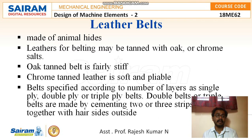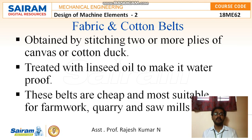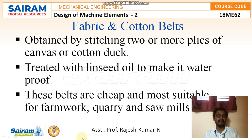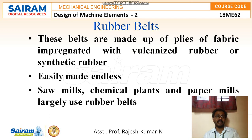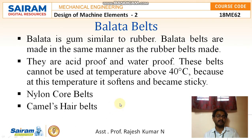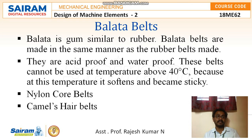Double or triple belts are made by cementing two or three strips together with hair sides outside. The next type is fabric and cotton belts, obtained by stitching two or more plies of canvas or cotton duck, treated with linseed oil to make them waterproof. These belts are cheap and most suitable for farm work, quarries, and sawmills. Rubber belts are made of plies of fabric impregnated with vulcanized or synthetic rubber. Palata belts are acid-proof and waterproof but cannot be used above 40°C as they soften and become sticky. Other types include nylon core belts and camel's hair belts.